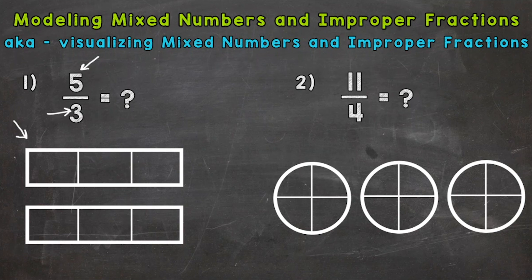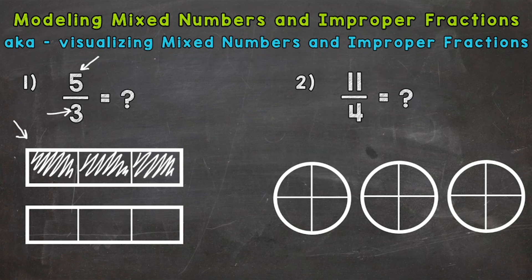We're going to use the rectangles down here in order to do so. I have two whole rectangles cut into thirds, so we need to fill in five-thirds. This would be one-third, two-thirds, three-thirds — three out of three gives us one whole rectangle — four-thirds, and five-thirds. So that model matches our improper fraction of five-thirds.